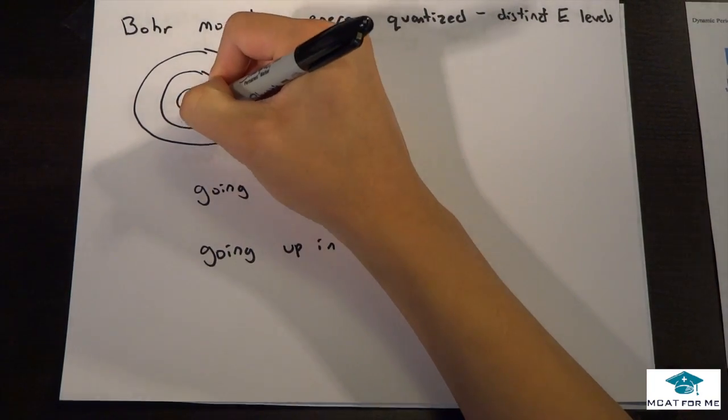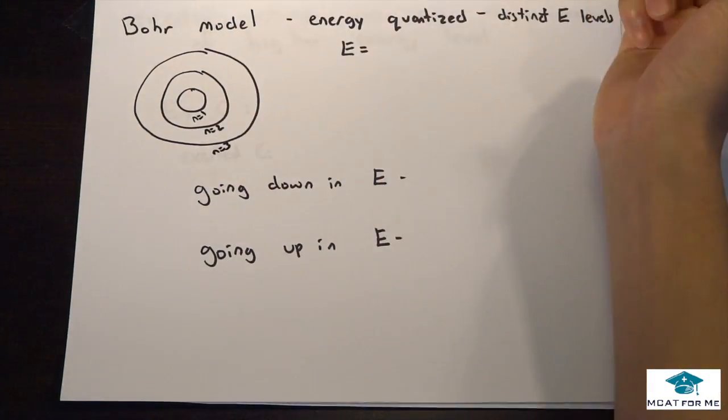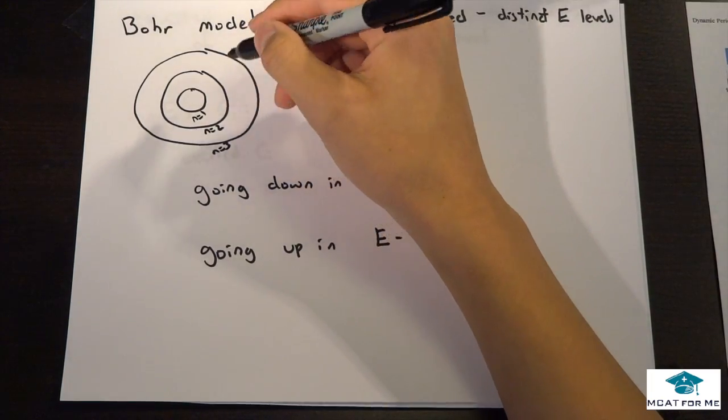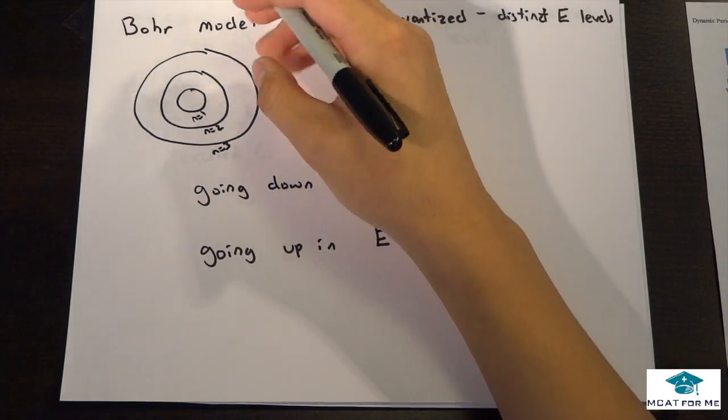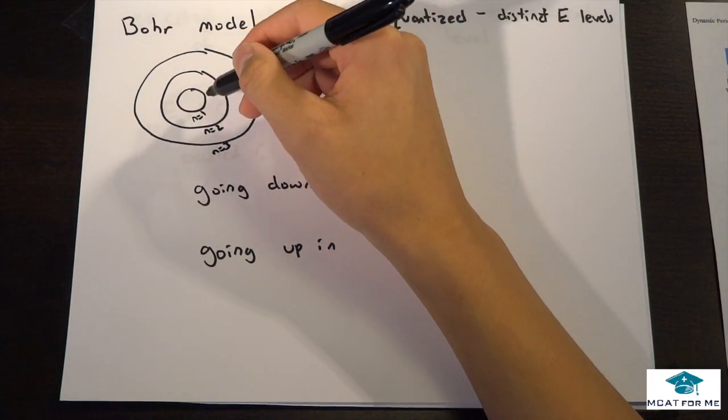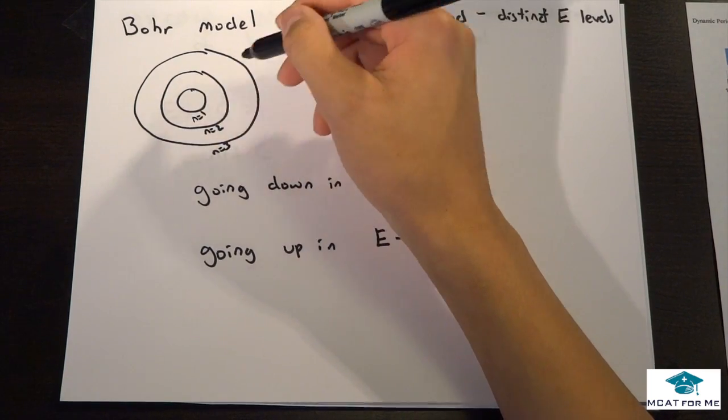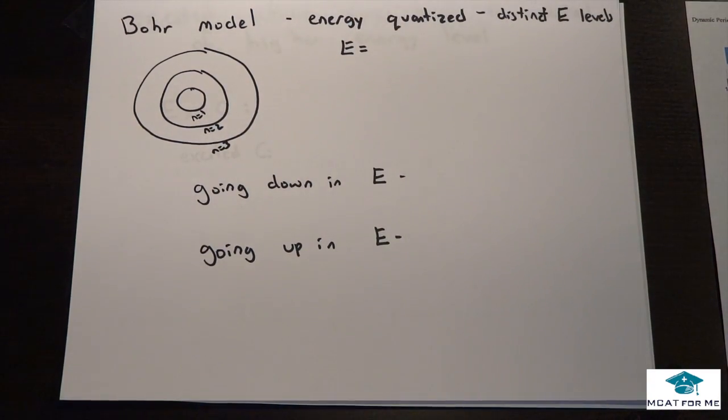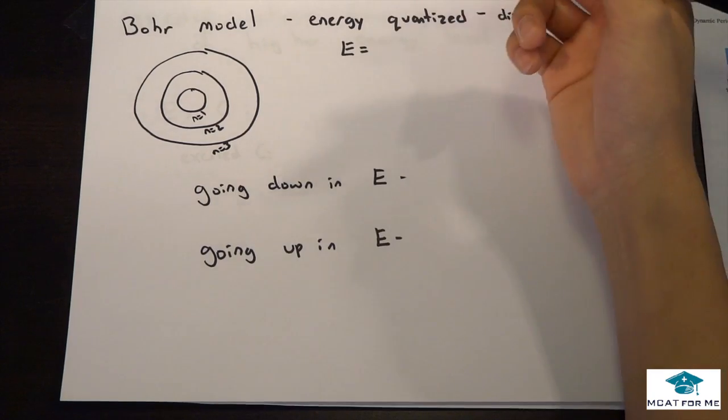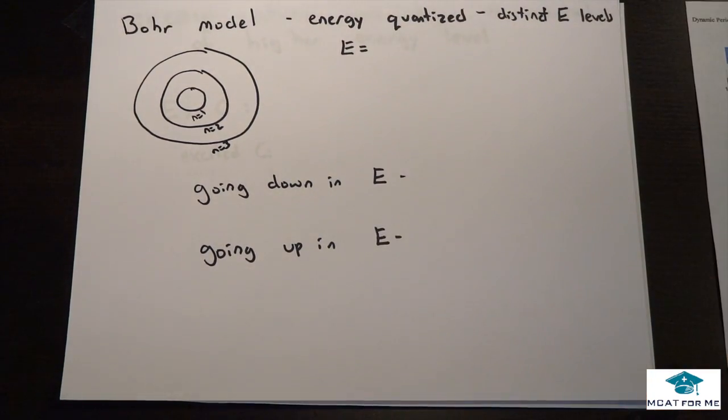So this is n equals 1, n equals 2, n equals 3. So to get from n equals 1 to n equals 2, we need a specific amount of energy to jump that. If we have any more or any less, we will not get to that energy level that we desire and it will not work. So that's why energy is quantized and quantized in photons is an example.